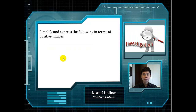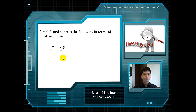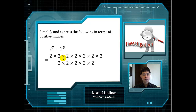Next, we will look at another law of indices. For example, we have 9 to the power of 5 divided by 9 to the power of 2. We can rewrite it in this way. By canceling out all the common terms in the numerator and the denominator, we will be left with 9 to the power of 3. Next, we have 2 to the power of 7 divided by 2 to the power of 5. We can rewrite it as a fraction and cancel out all the common terms, leaving us with 2 to the power of 2.